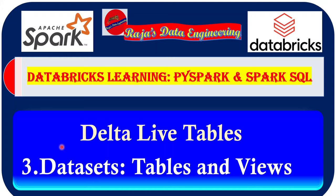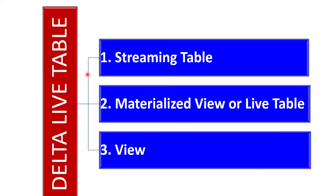In order to start the development, first we have to define different datasets within Delta Live Table. We are having three different types of datasets for Delta Live Table. The first one is Streaming Table. The second one is Materialized View, also called as Live Table - both are interchangeable and refer to the same concept. The third one is View. I will explain more in detail about each of the datasets so you can get a better understanding of which scenario or use case we can use for each kind of dataset.